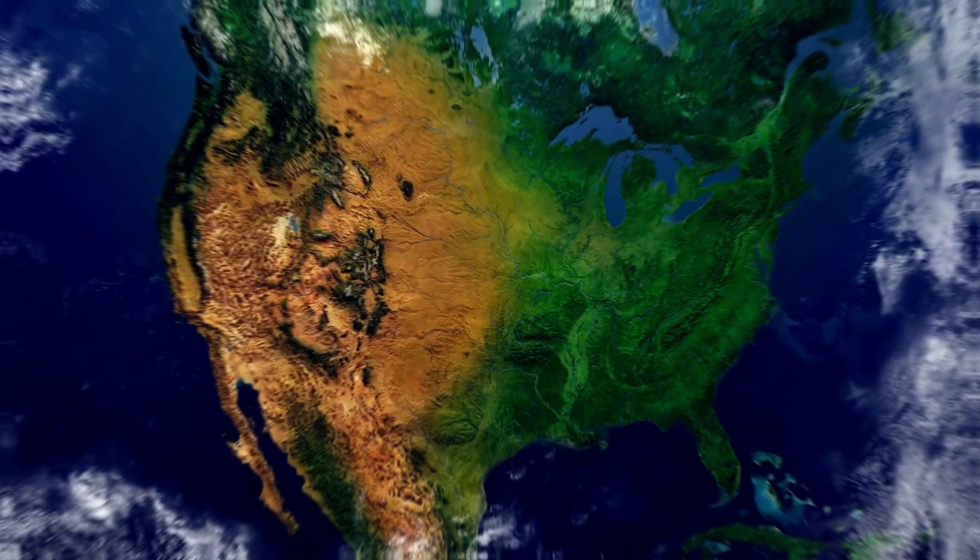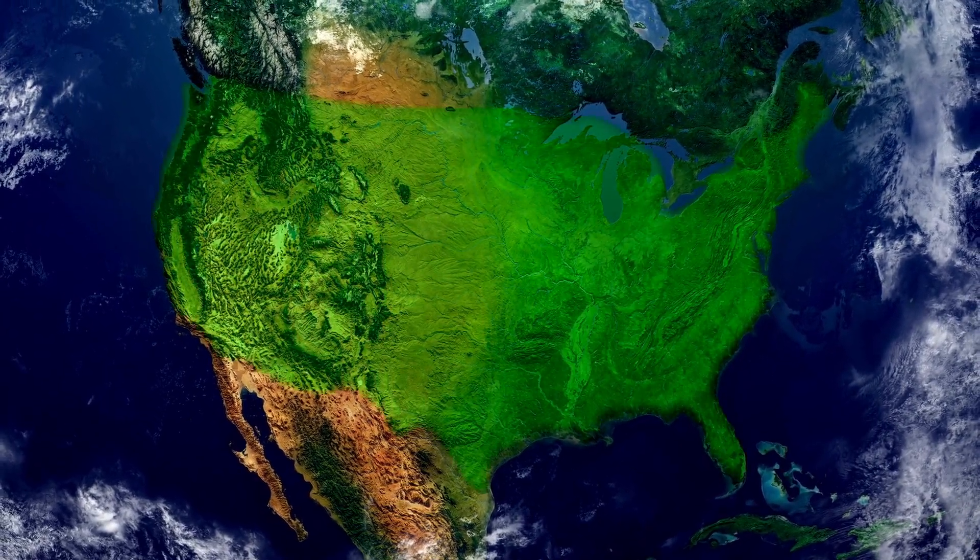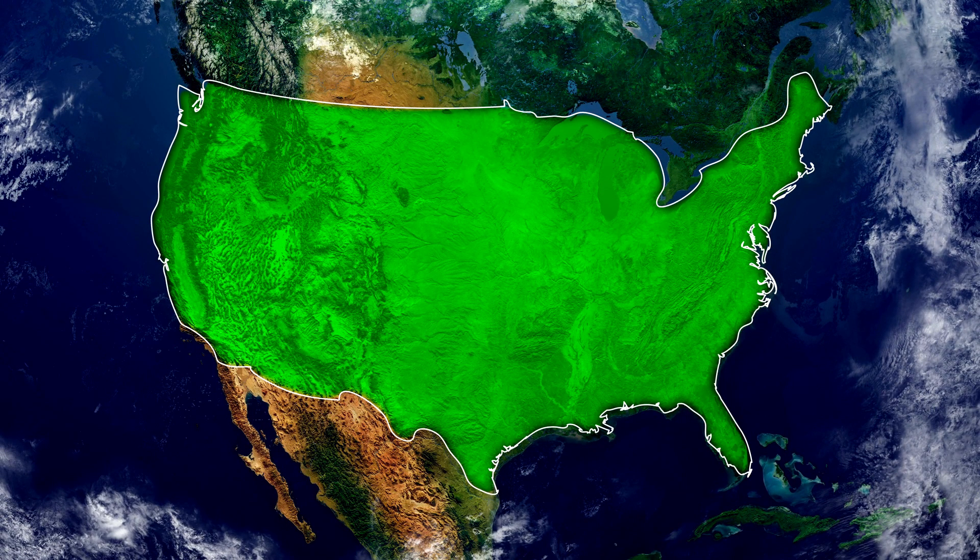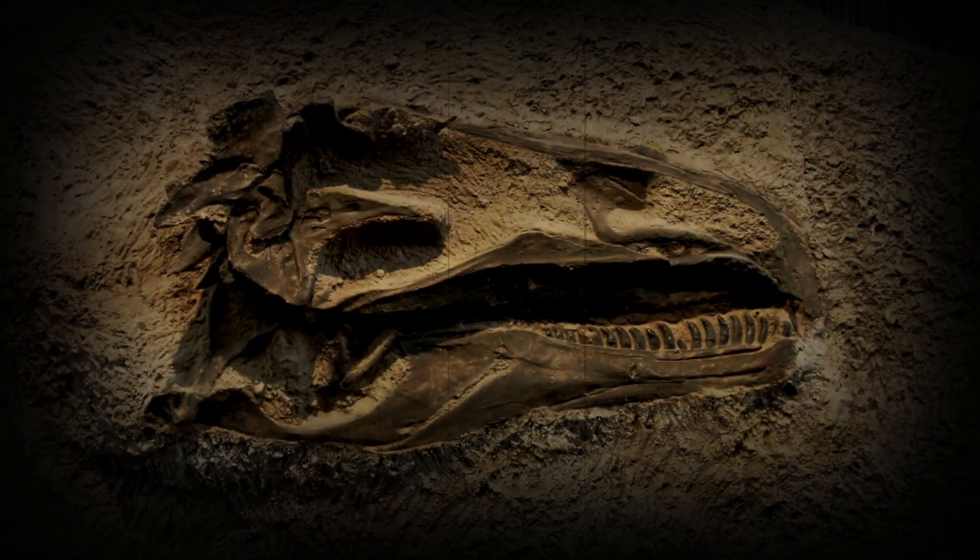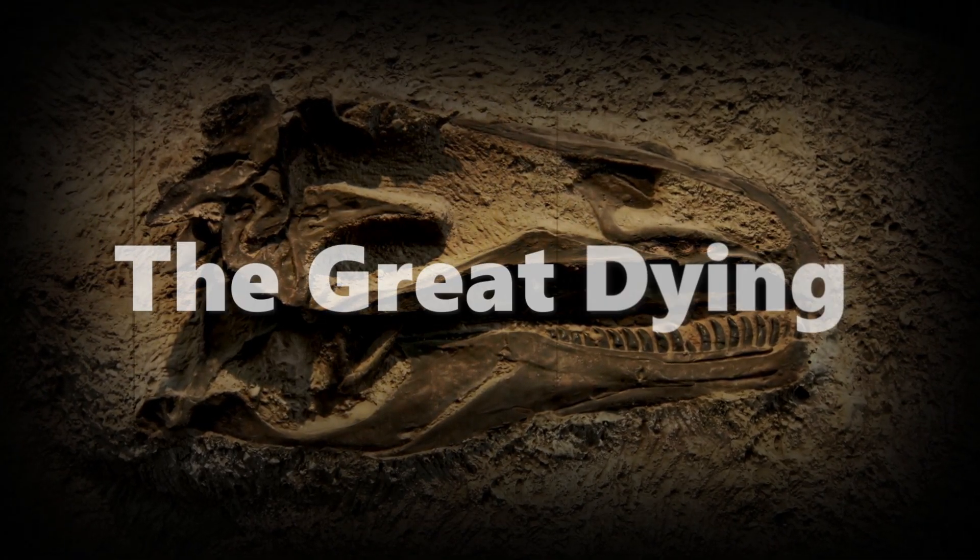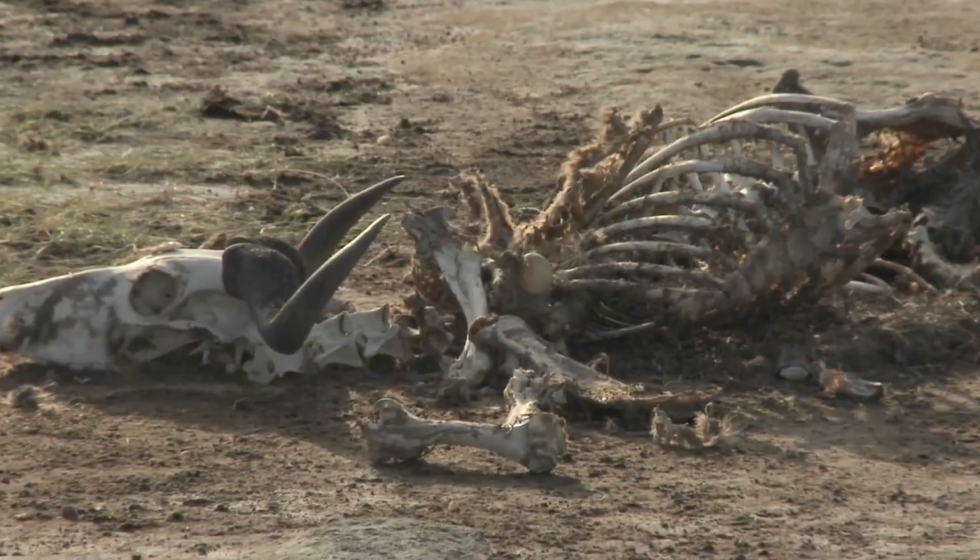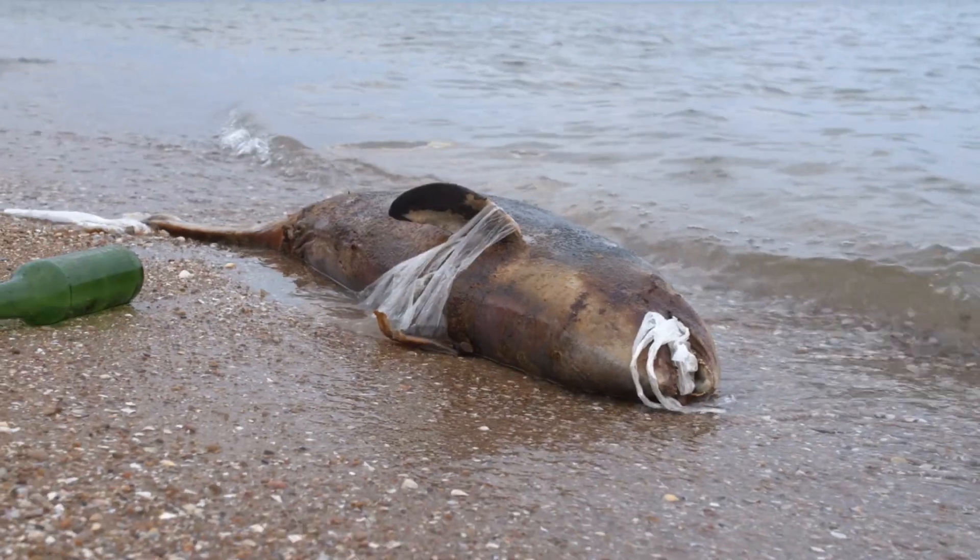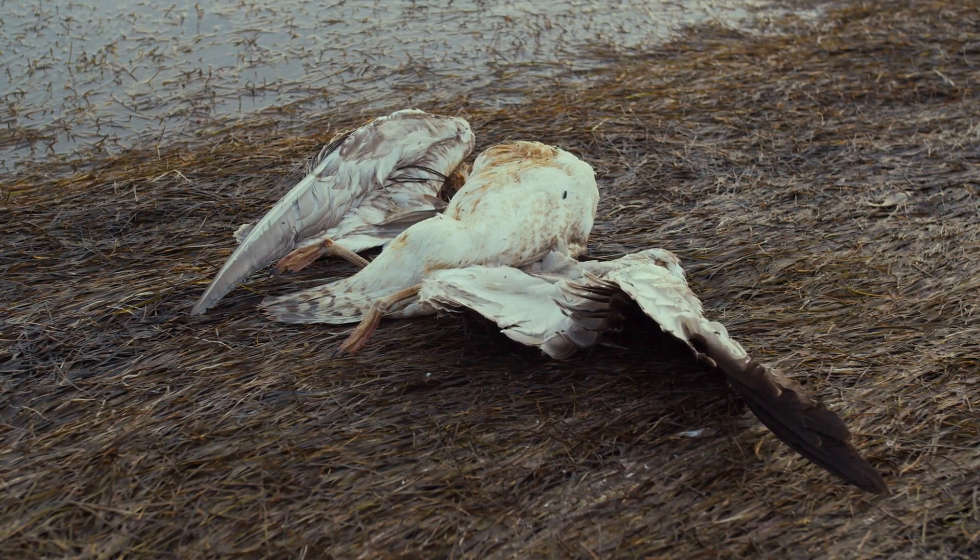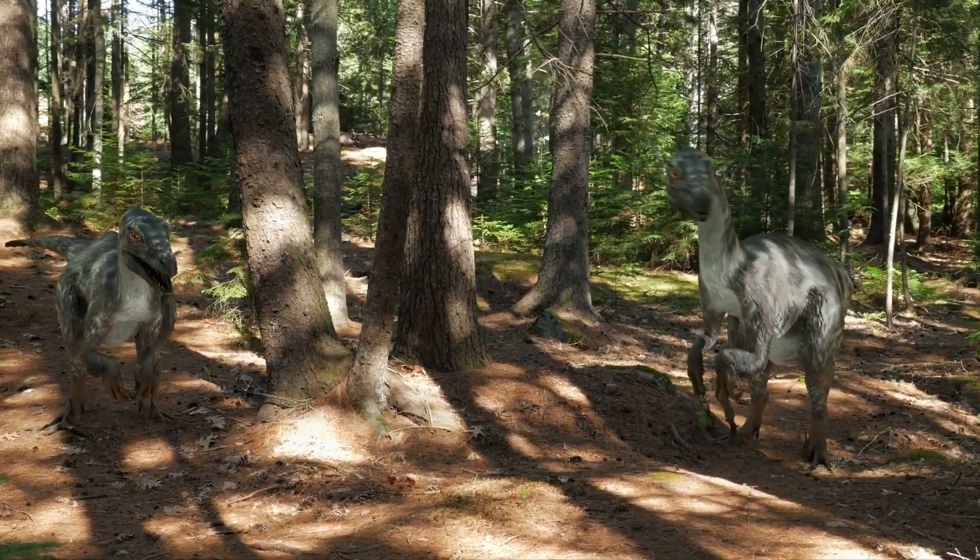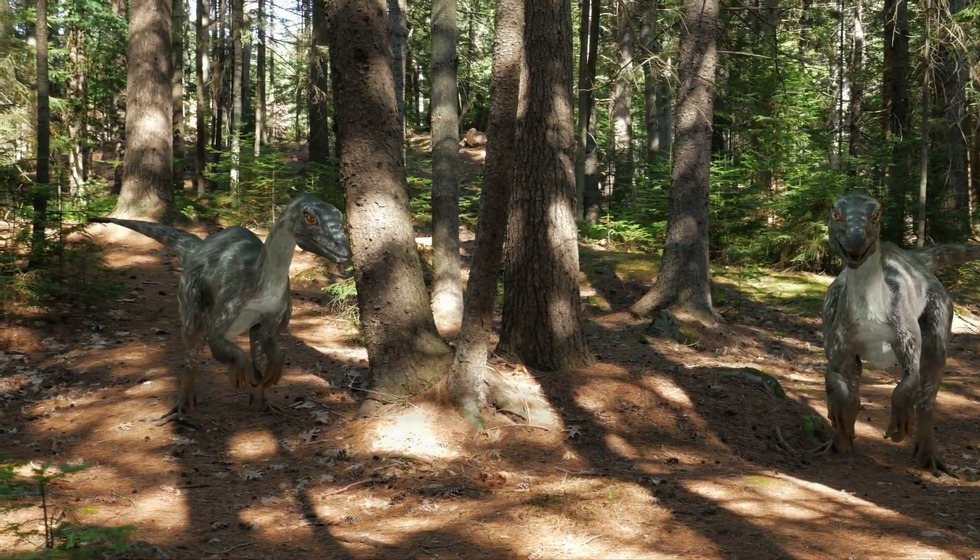Pangea, our last and largest supercontinent, spanned the planet 250 million years ago. Unfortunately, the largest mass extinction event in human history occurred during this time period, the Great Dying. Huge levels of greenhouse gases and rapid global warming killed off almost 90% of all species on Earth. However, this global extinction helped prepare the way for the next generation of animals to arise.